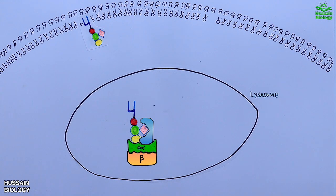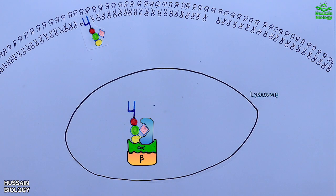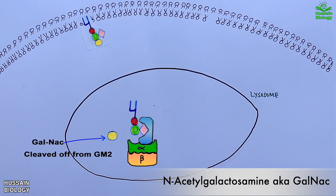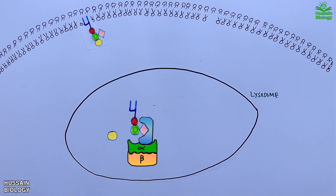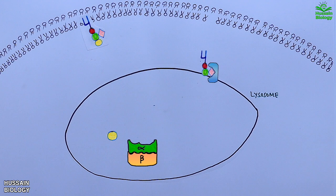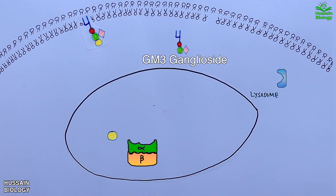The GM2 ganglioside then binds with HexA — hexosaminidase A enzyme — as shown in the diagram. Both proteins, HexA as well as GM2 activator protein, mediate the enzymatic reaction. HexA cleaves the terminal N-acetylgalactosamine from GM2 ganglioside, as shown in the diagram, and converts it into GM3 ganglioside. The activator protein then either delivers this GM3 molecule out of the lysosome for further use or keeps it there for further metabolism.